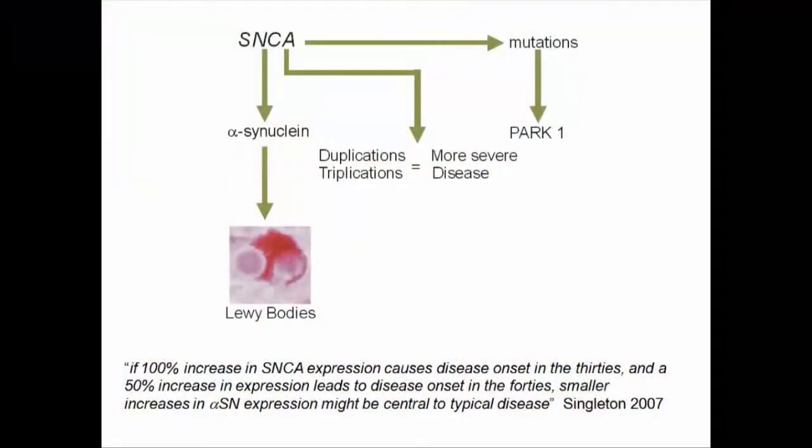The role of alpha-synuclein became of interest when the gene for alpha-synuclein, which is SNCA, was found to have mutations which caused a rare heritable form of autosomal Parkinson's, or PARK1. And shortly after that it was discovered that alpha-synuclein was one of the core proteins in the Lewy body, which is commonly seen as the defining histopathological marker of Parkinson's disease.